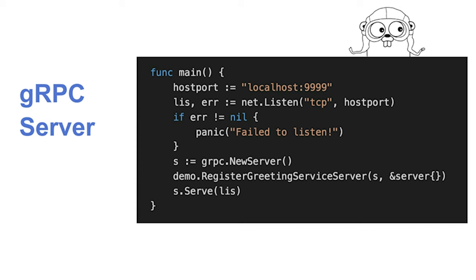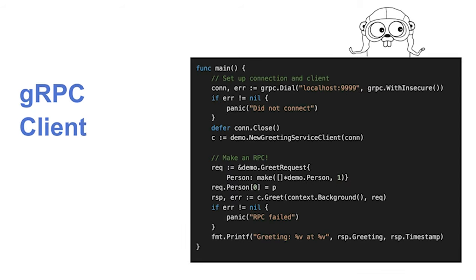On the client side, you connect to the host where your server is running, create a request, pass in some names using the same person object we created earlier, and get a response. It's literally that simple. These connections can go through standard load balancers, or you can add your own custom load balancing logic.